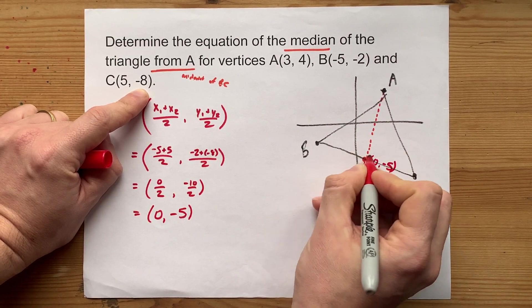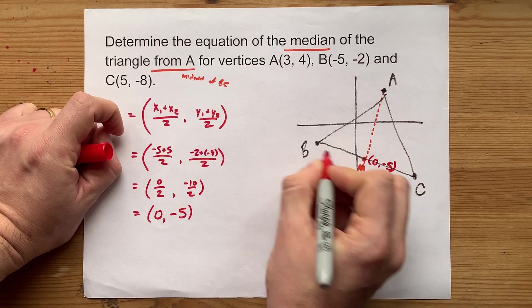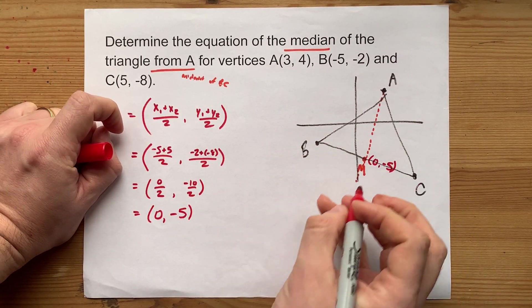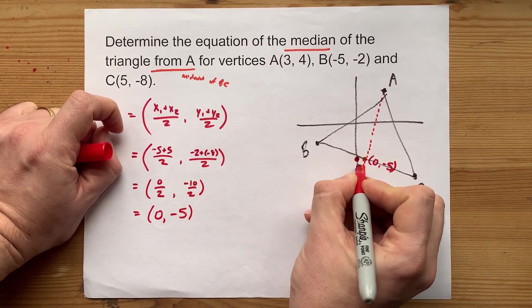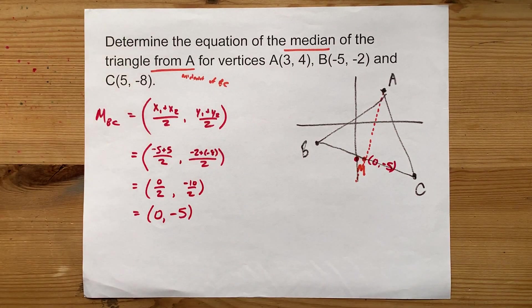You know what? I must have misinterpreted where my points were. I mean, I was just estimating anyways. That point is actually right here. It is the y-intercept. Isn't that going to be fun?